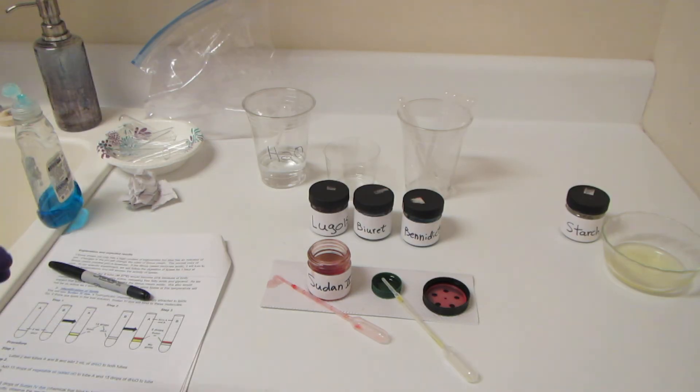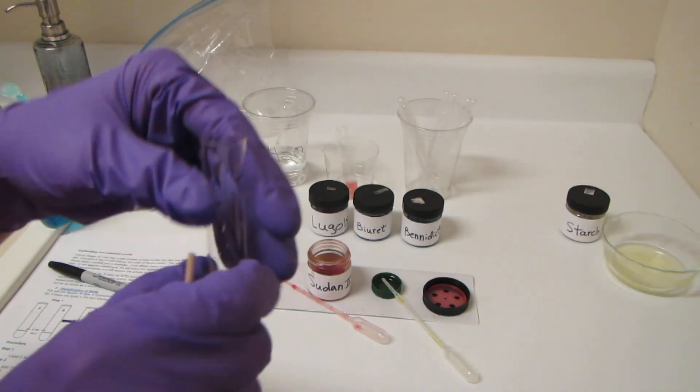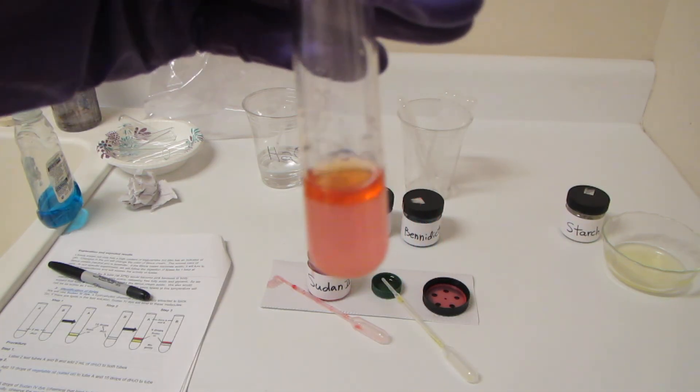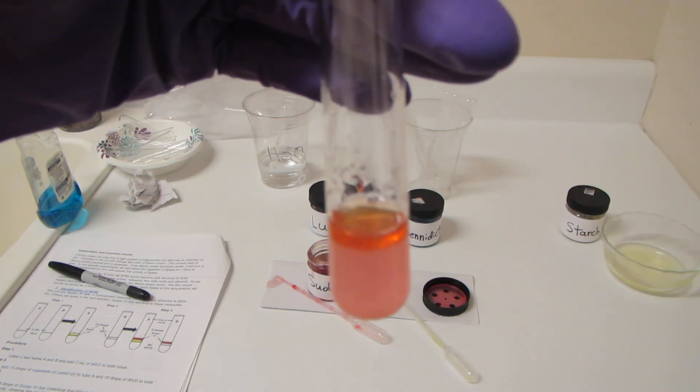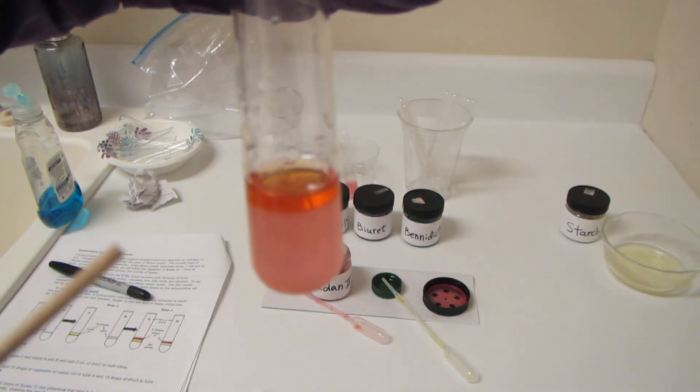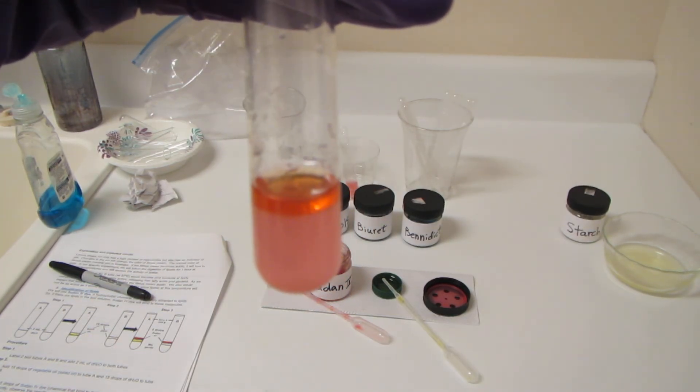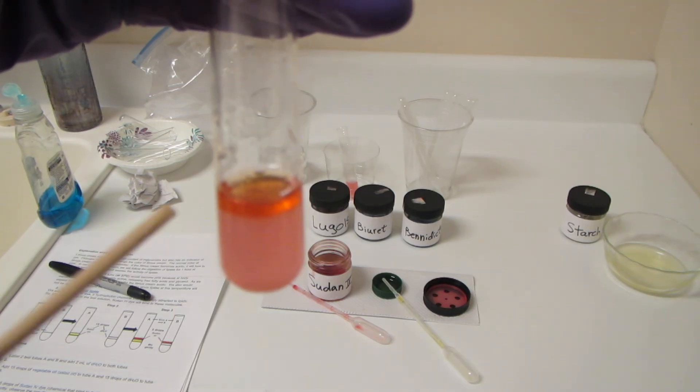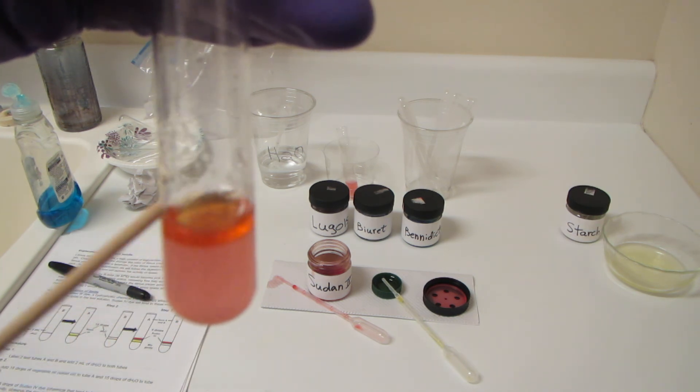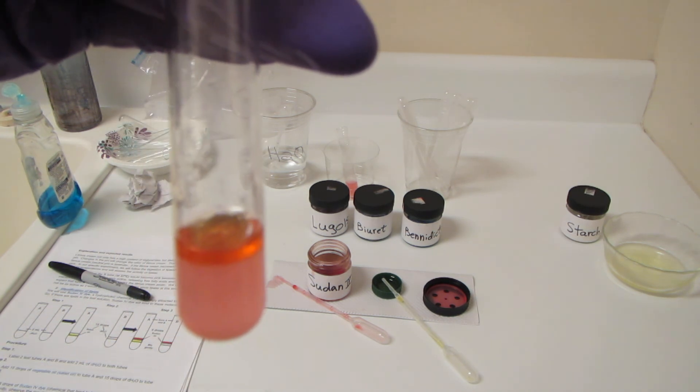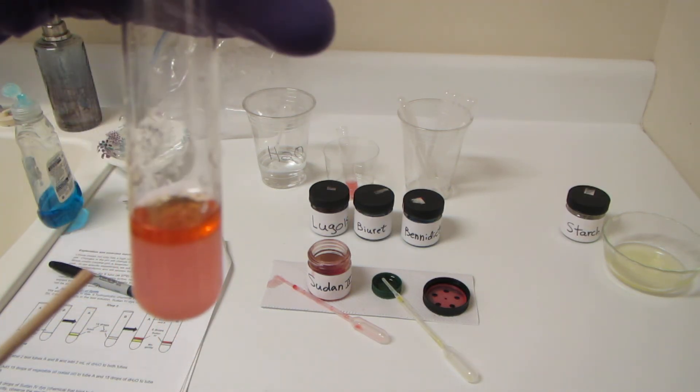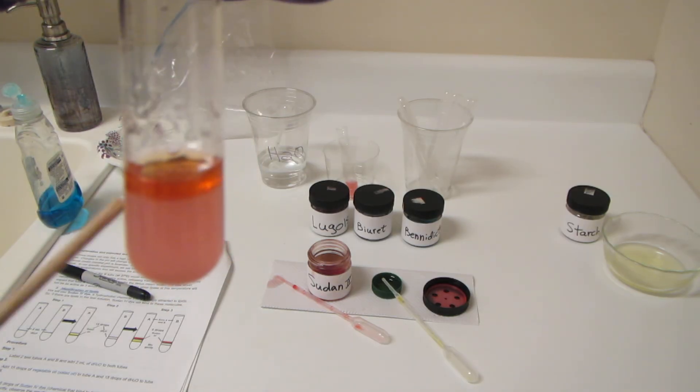Now, next thing we're going to show you on the next video is what happens when I add bile to these. But for the moment, if I had put an unknown liquid in there and I didn't know what it was, and I put that magenta dye, that Sudan 4 in there, I would know based on this behavior of the dye that this must be a fat. So you could take an unknown liquid, go ahead and put some Sudan 4 in there, and then boom. If you see this, you know there's fat present.